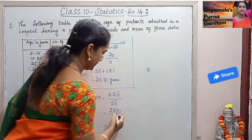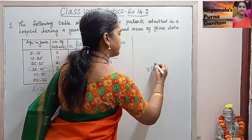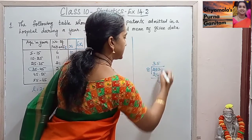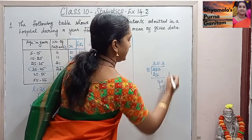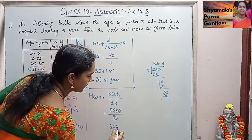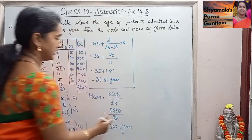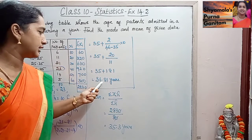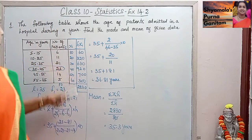Simplifying 2830 divided by 80: this equals 35.375, approximately 35.3. So the mean is 35.3 years. To summarize: mode for the given data is 36.81 years and the arithmetic mean is 35.3 years.